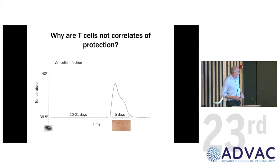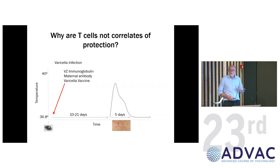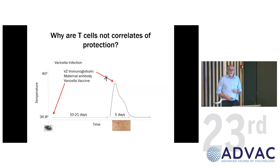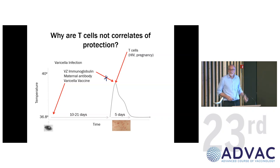The answer is quite simple: antibody is required to prevent infection — it neutralizes the virus. Maternal antibody means you don't get severe chickenpox in infancy. Zoster immunoglobulin as passive antibody can prevent severe varicella. The vaccine also protects through generating antibody against infection. But if you give antibody to someone who already has chickenpox, it does nothing. Once you've got the infection, what you need is T cells. So antibodies are preventing the infection, while T cells are limiting it once you've got the infection. T cells are critical for limiting infections once they've happened.